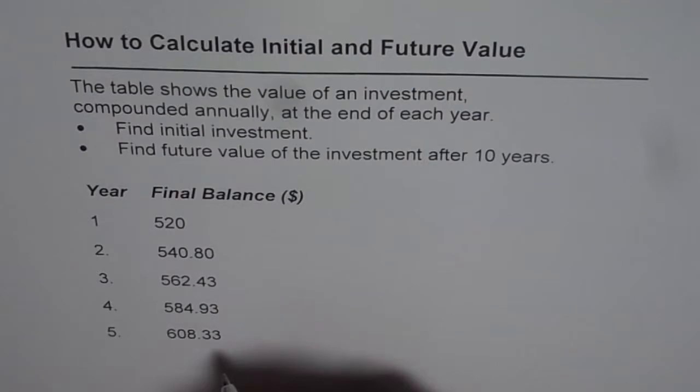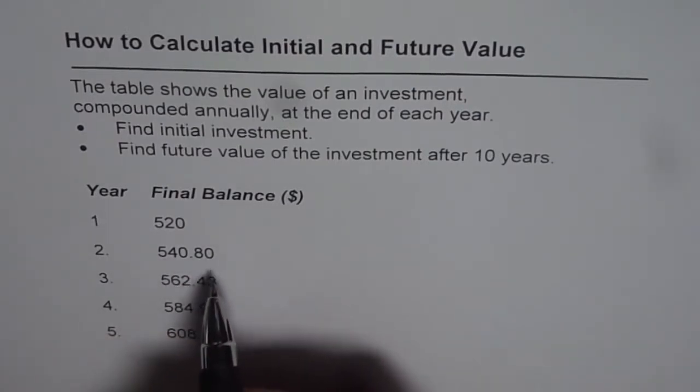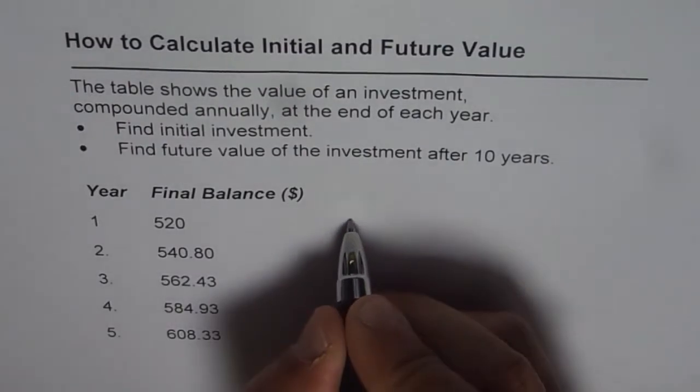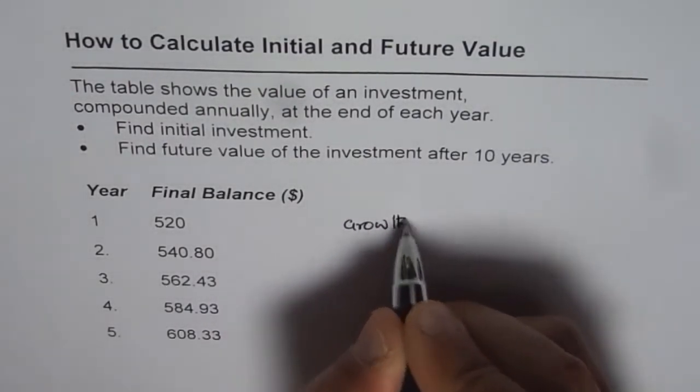So if we find that factor then it'll be easy for us to answer the question. So let's figure out what that growth factor is, which we can find by dividing consecutive values of the investment. So let's find growth factor first. So that is the first step, growth factor.